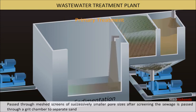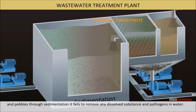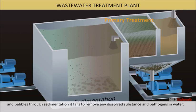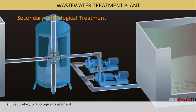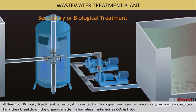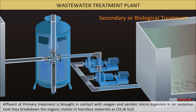After screening, the sewage is passed through a grit chamber to separate sand and small pebbles by sedimentation. Primary treatment fails to remove any dissolved substance and the pathogens in water. Secondary or biological treatment: the effluent of primary treatment is brought in contact with oxygen and aerobic microorganisms in an oxidation tank.